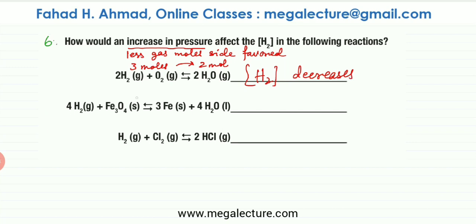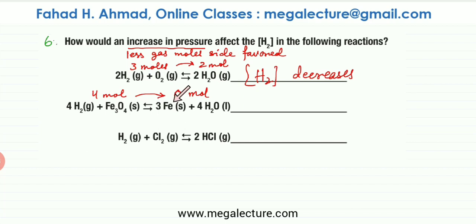In the next reaction, you're increasing pressure — less gas moles side. There are four moles of gas on the reactant side. Remember, only count gas moles — this one is solid, so don't count it. On the product side, there is no gas — zero moles of gas. So less gas mole side is the product side. The forward reaction is favored, and if the forward reaction is favored, the amount of H2 decreases again because H2 reacts to produce products. So H2 concentration decreases.